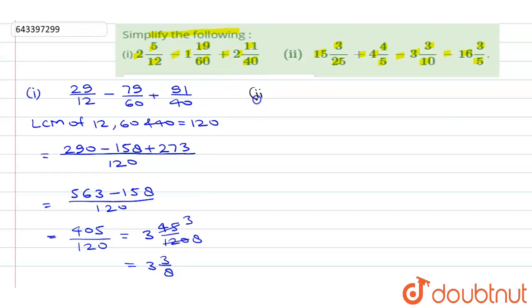Now let's move to the second question. In the second question we have to simplify 15 3/25 plus 4 4/5 minus 3 3/10 minus 16 3/5. First we'll convert this mixed fraction to improper fraction. We'll get here 15 into 25, 15 times 5 is 75 carry 7, and 15 times 2 is 30, so 375 plus 3 will get us 378/25.